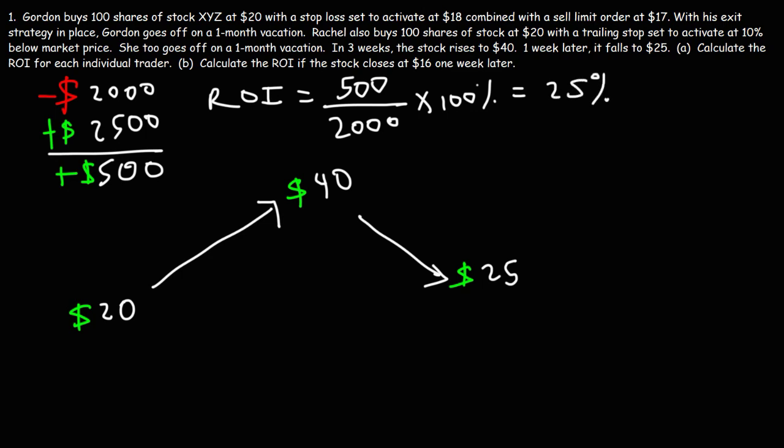Now in the case of Rachel, she invested $2,000 into this trade as well. The question is, at what value did she sell her shares? Because she didn't sell it at 25. The system, the trailing stop, automatically sold her shares at a certain price.